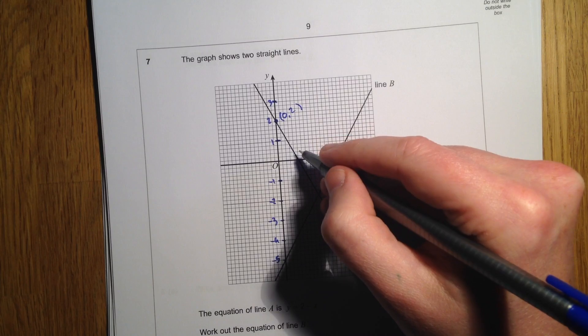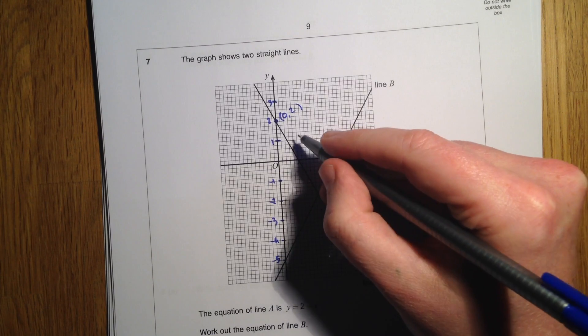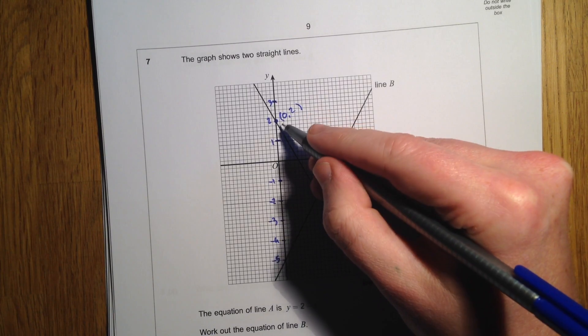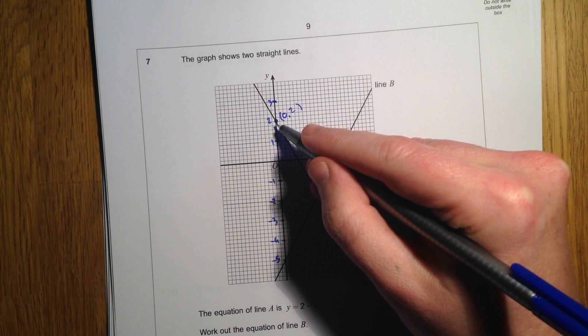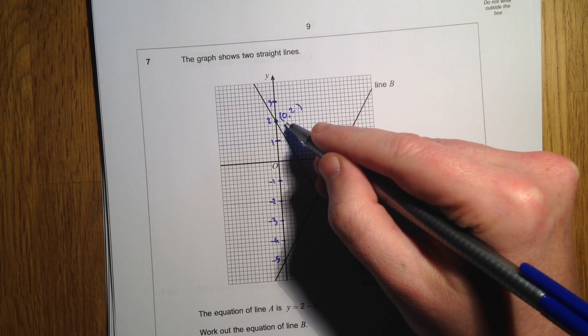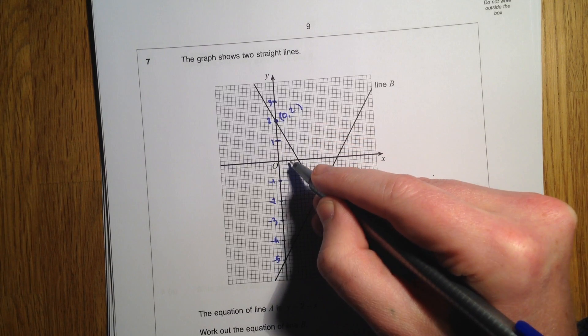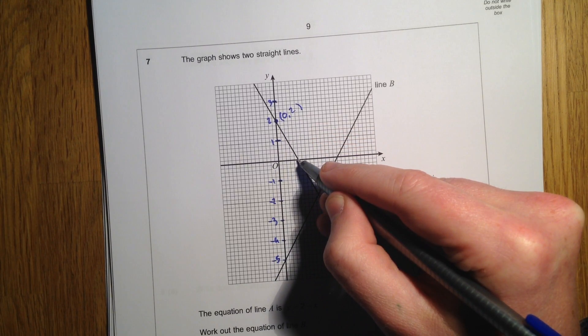That's negative 1, negative 2, negative 3, negative 4. So this is going to be negative 5.